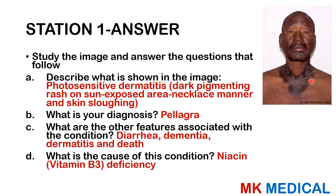There is dark pigmentation — a dark pigmented rash — in the shape of a necklace in the sun-exposed area of the neck, and you can see the skin is even sloughing off. This can be seen in the neck and in the feet. This is seen in a condition known as pellagra, which is characterized by the four D's: diarrhea, dementia, dermatitis, and sometimes even death.